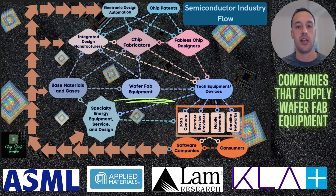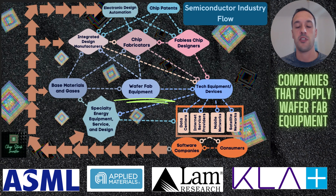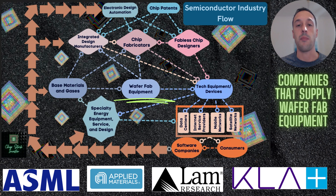That also flows into the wafer fab equipment segment — another special spot on the flowchart where there's an oligopoly, similar to EDA and chip patents. Wafer fab equipment companies include ASML Holding, Applied Materials, LAM Research, KLA, and others. These are the companies that make the actual equipment needed to manufacture chips.